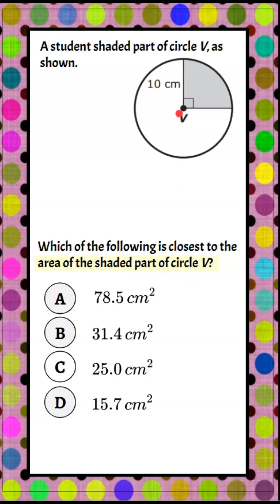Looking at circle V, I can see that this shaded part right here has a radius of 10 centimeters. There's a little box here that indicates this is a 90-degree angle.